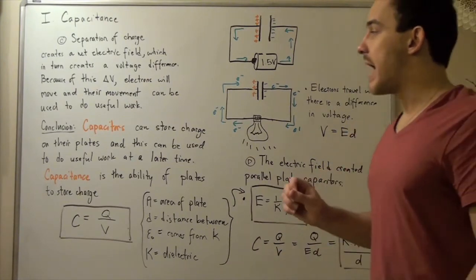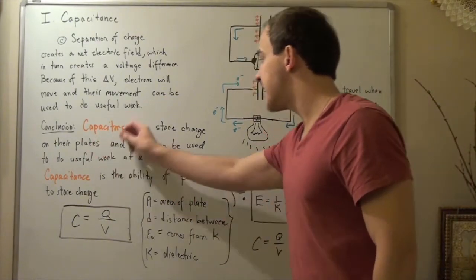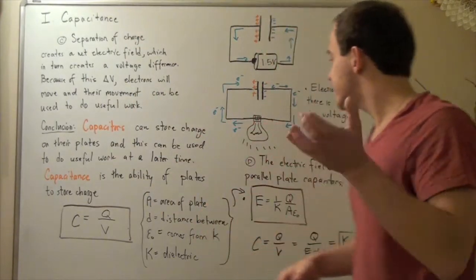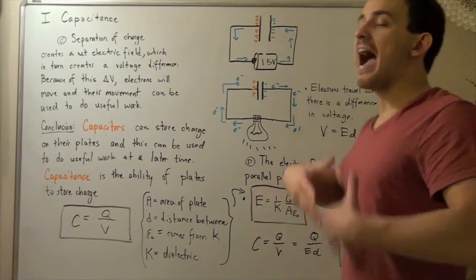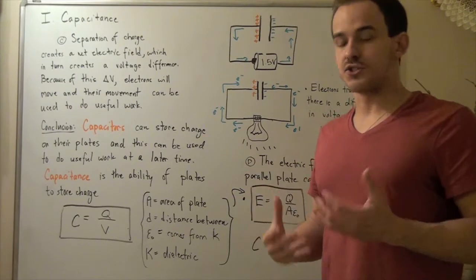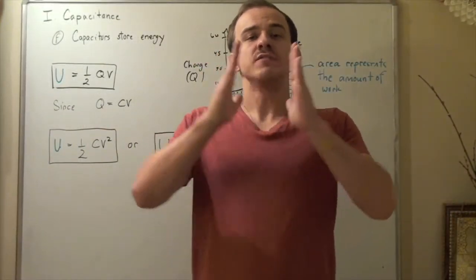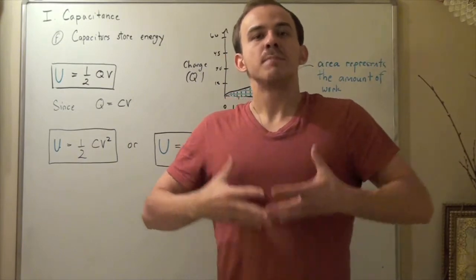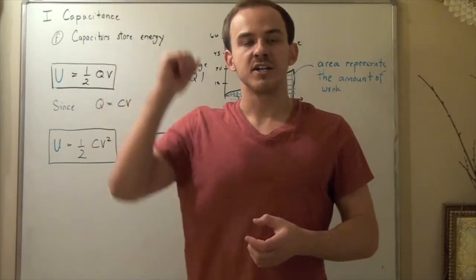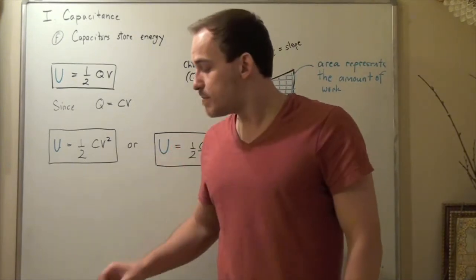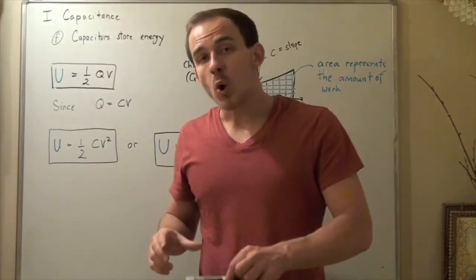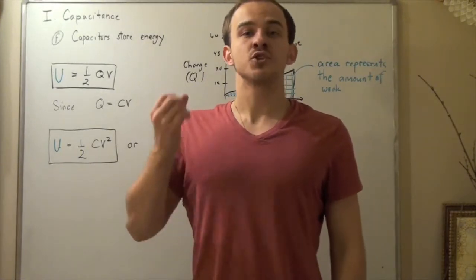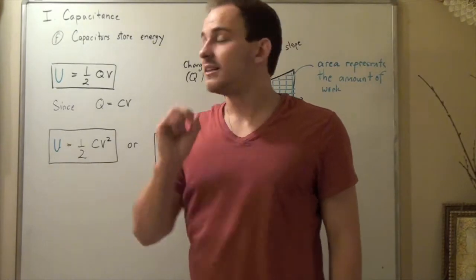Now let's talk about energy. Capacitors store charge on their plates, and this can be used at a later time to do useful work, as we saw with light bulbs and motors. Separation of charge creates an electric field, which creates a change in voltage, and this voltage propels electrons from higher to lower potential — just as mass moves from higher to lower gravitational potential. But how much electrical work is created?